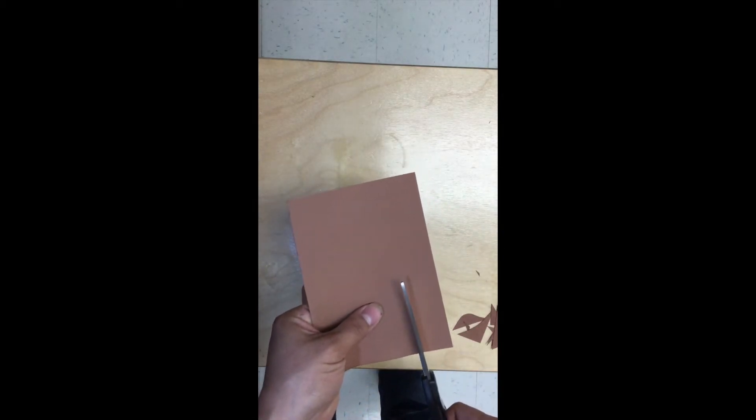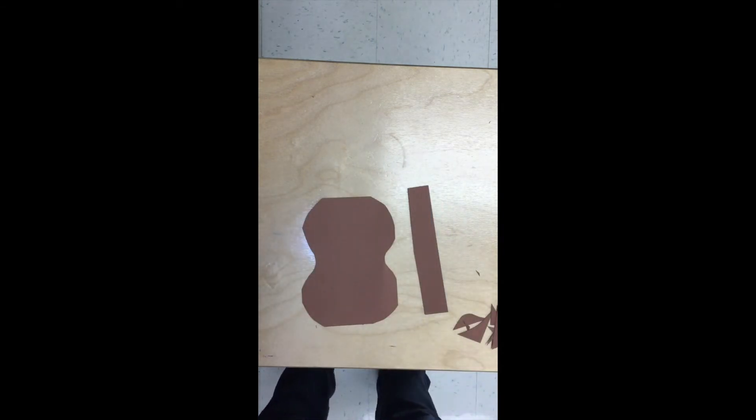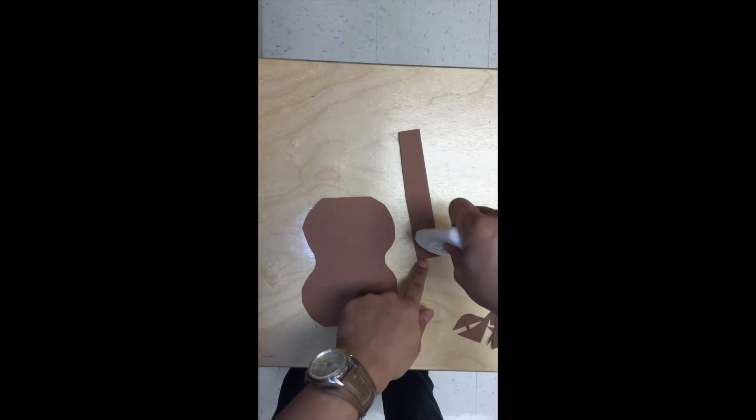Now for the neck, we will cut a long skinny rectangle, easy peasy lemon squeezy. Take your tap glue, remember it is push and squeeze.